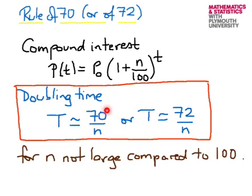The rule of 72 is slightly more accurate, but 72 is often used because it is divisible by a larger number of counting numbers. This rule is only valid if n is not very large compared to 100.